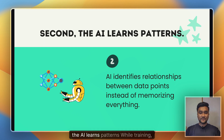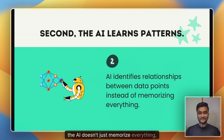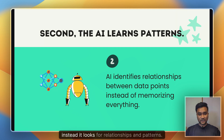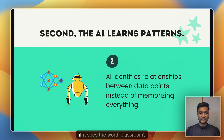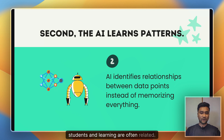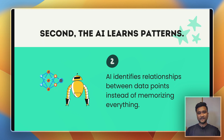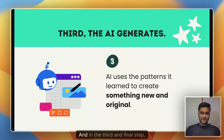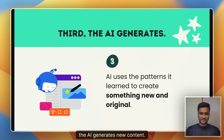In the second step, the AI learns patterns. While training, the AI doesn't just memorize everything — instead, it looks for relationships and patterns. For example, if it sees the word 'classroom,' it learns that words like 'teachers,' 'students,' and 'learning' are often related. This helps it predict and generate relevant responses or creations.